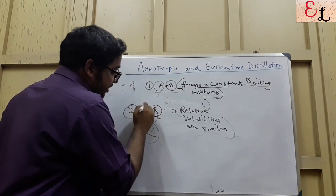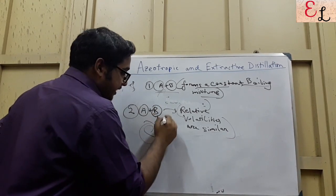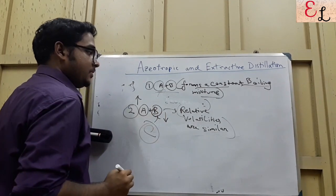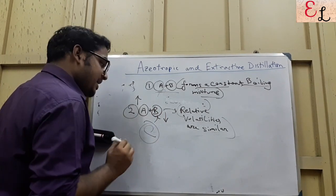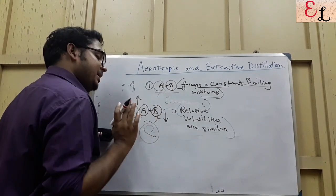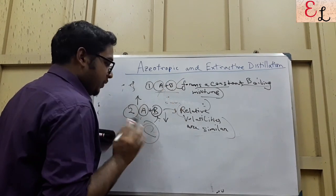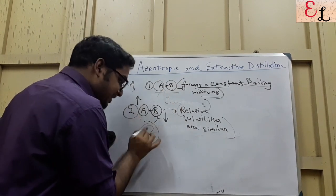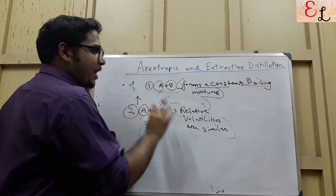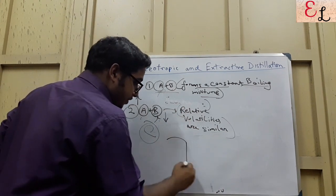This entrainer C changes the properties of A and B such that B's volatility decreases and A's volatility increases. A was lighter than B, but A and B had similar volatilities — that's why both tended to form vapor or liquid at the same temperature. What C does is change the volatilities of A and B, affecting volatilities rather than forming an azeotropic mixture.